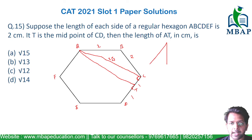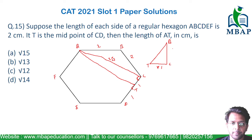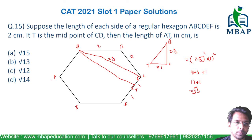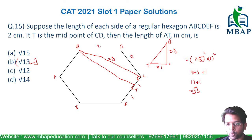There is a right angle triangle forming with vertices A, C, and T. CT = 1 and AC = 2√3. So AT = √((2√3)² + 1²) = √(4×3 + 1) = √(12 + 1) = √13. The length of AT is √13. Easy question — solved!